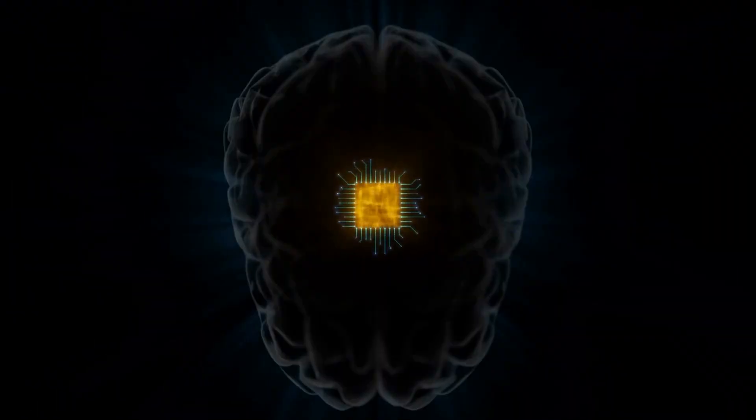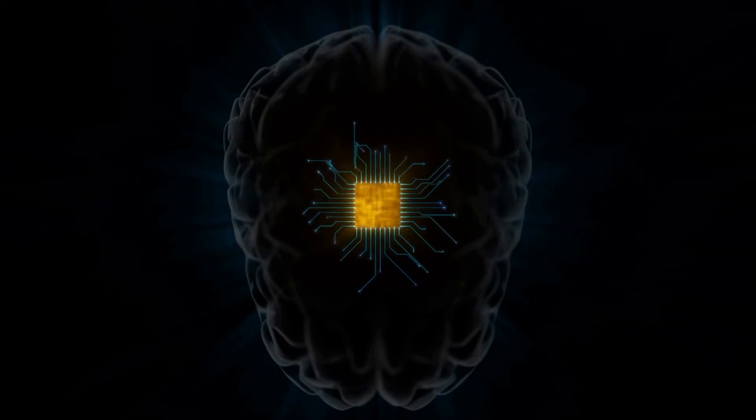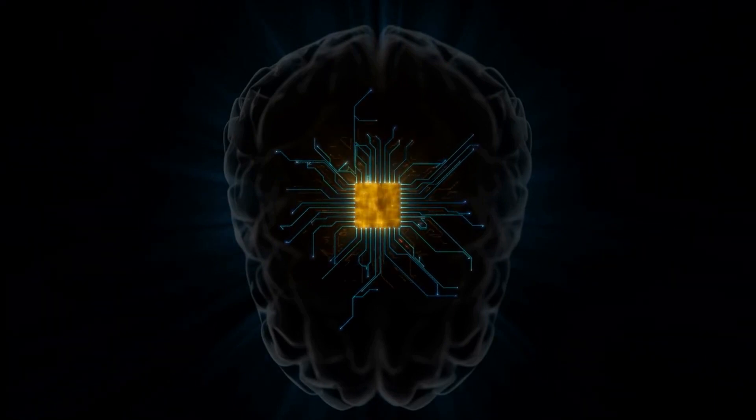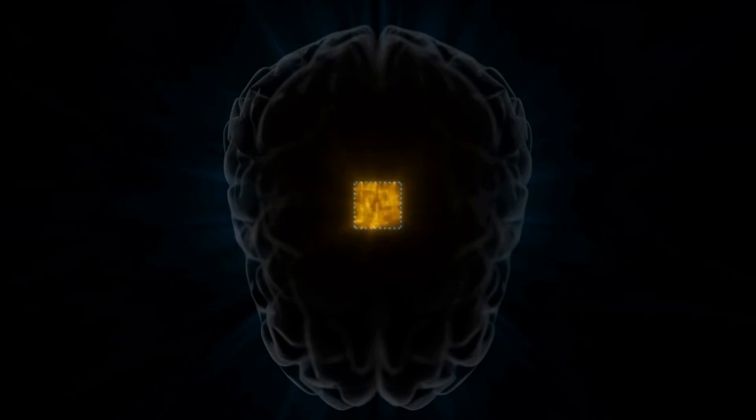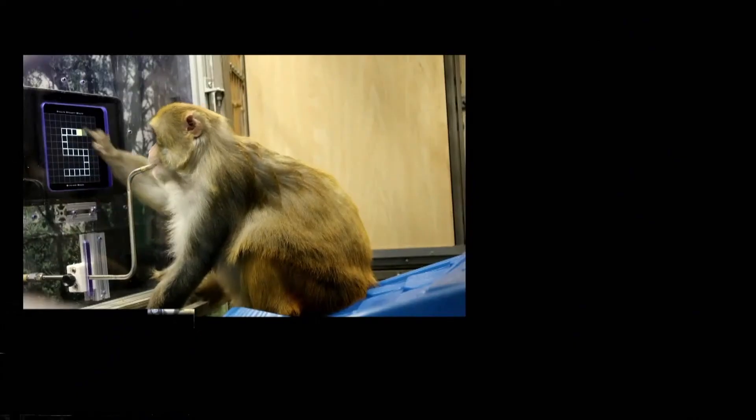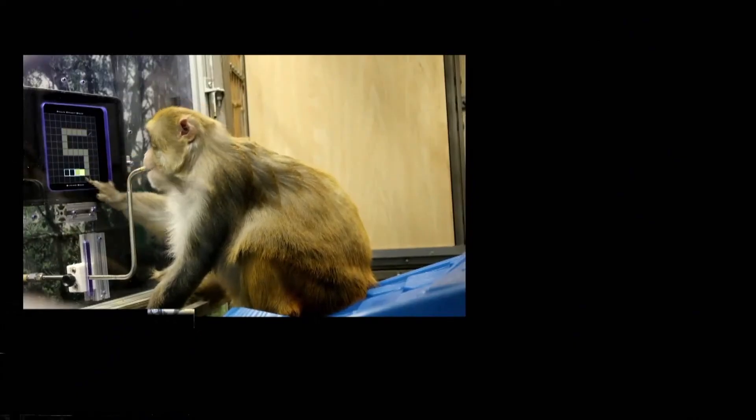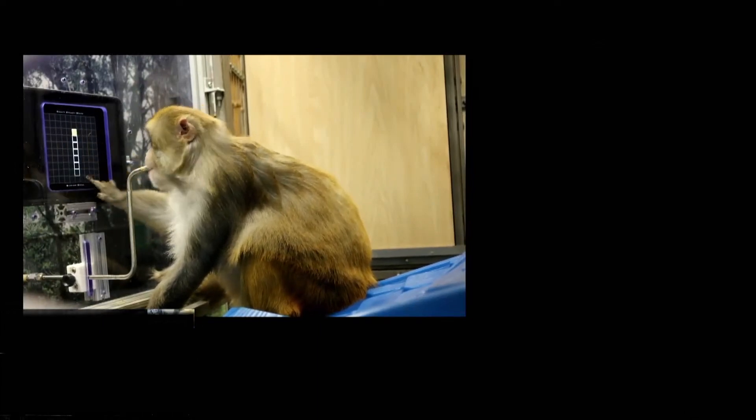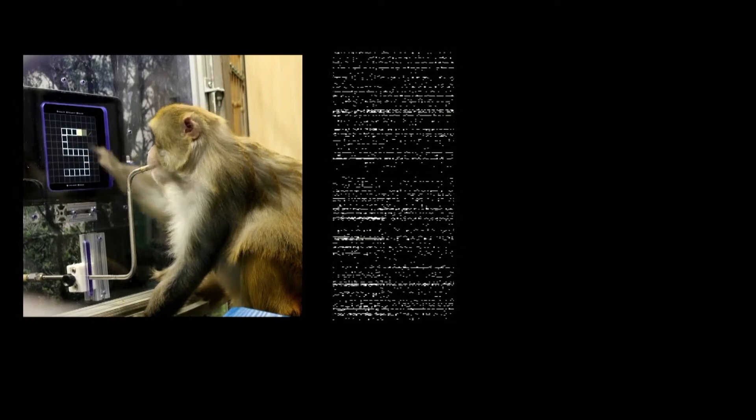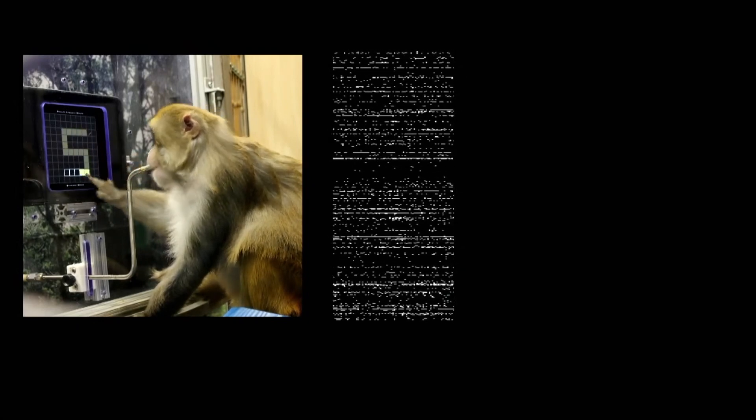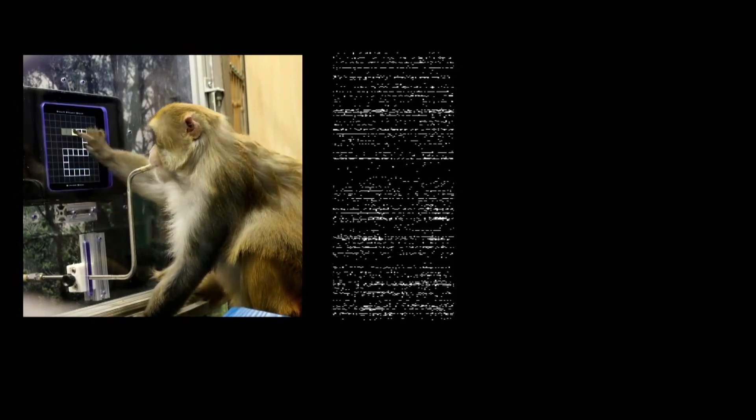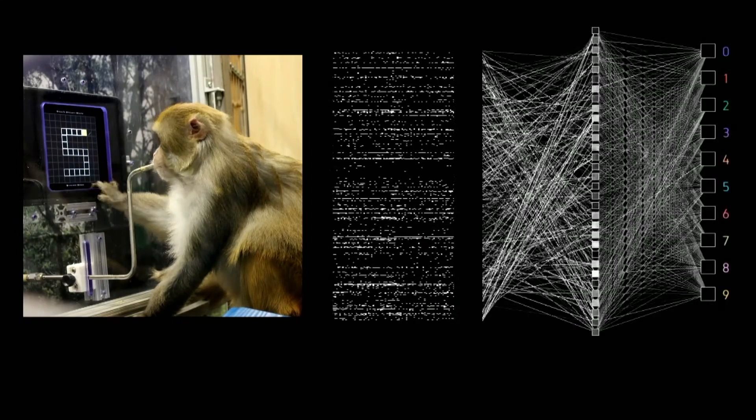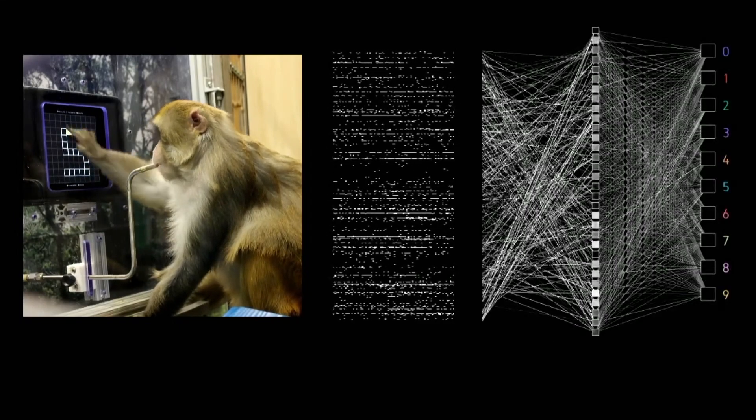The brain-machine interface works on the principle of connecting the brain with bodily organs and muscles. This is done by interpreting the electrical signals generated by the brain, which are like a programming language for our bodies. When there is a break in the connection between the brain and body due to physical damage or degenerative diseases, this device acts like a bridge to pass on these electrical impulses, thereby bypassing the disconnection.